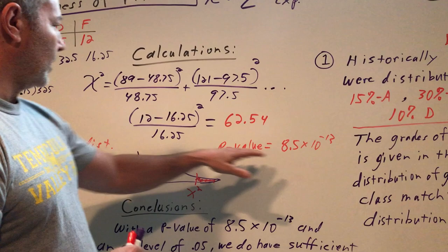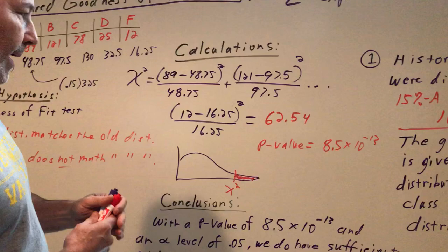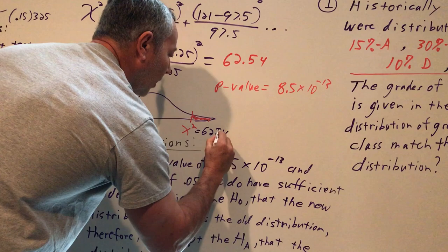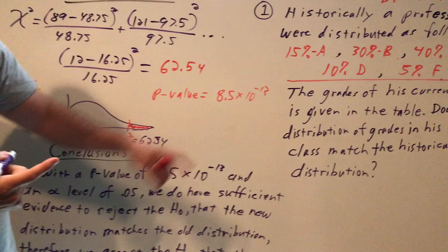And there's almost no chance I could have got the grades that we got if our new distribution matched the old one. So our chi-squared value here is 62.54. That completes my picture. And with our p-value being low, we reject the null hypothesis.